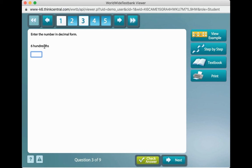Three, look at this. Enter the number in decimal form. Six-hundredths. Well, I know it's smaller than a whole. So, I'm going to do zero-point. If I put a six right there, that's six-tenths. I need to put a zero and a six.